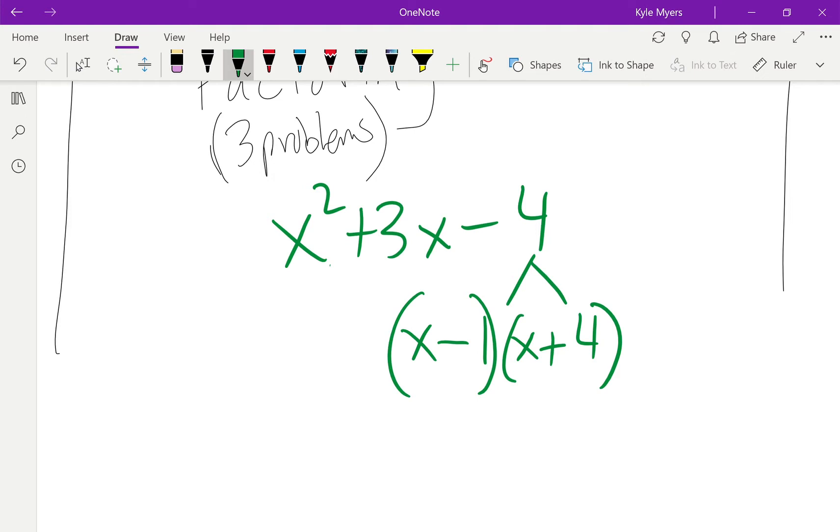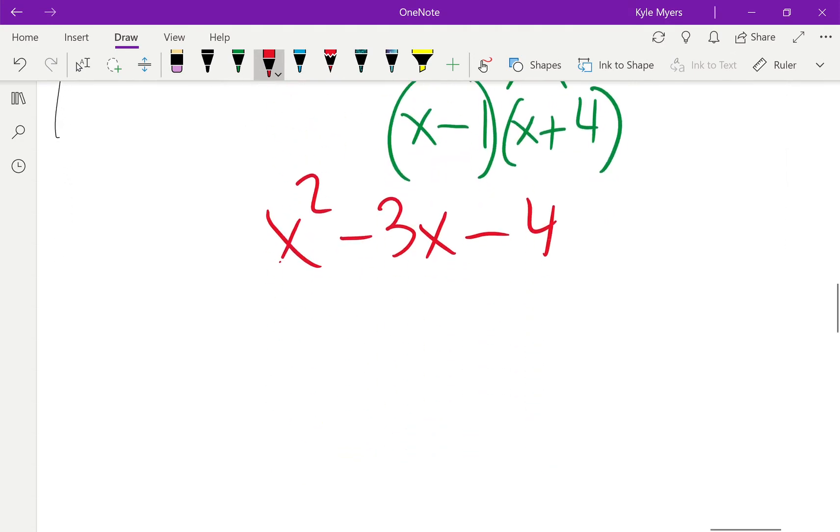Now let's do the negative version. I'm going to crank that out real quick: x squared minus 3x minus 4. So check it out, it's going to be the same thing. 4 is 1 times 4, or 2 and 2. And we want to make the 3 negative this time, so we're going to make the 4 negative. 1 minus 4 is negative 3. So throw some x's in front and there we go.